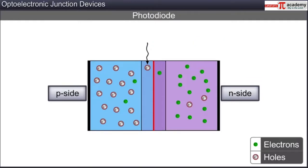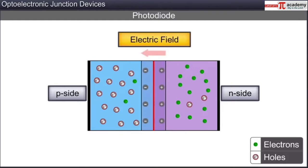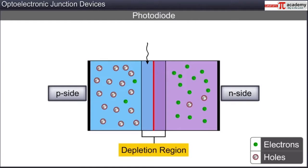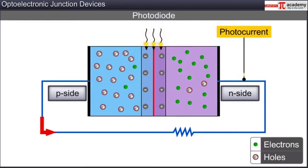A photodiode is designed so that the maximum number of electron-hole pairs is created in the depletion region around the PN junction. We know that the depletion region has an electric field created due to the separation of static charges on both sides of the PN junction. As soon as an electron-hole pair is created, the electric field across the depletion region pushes the hole towards the P-side and the electron towards the N-side. Due to this movement of charge carriers, a small photocurrent is generated through an external load connected across a photodiode.